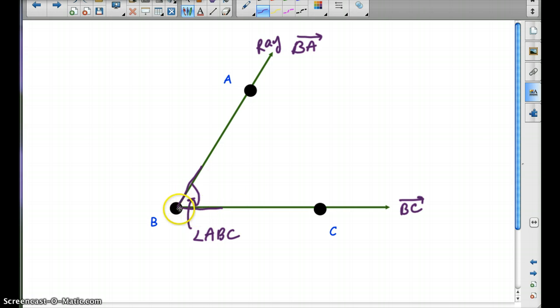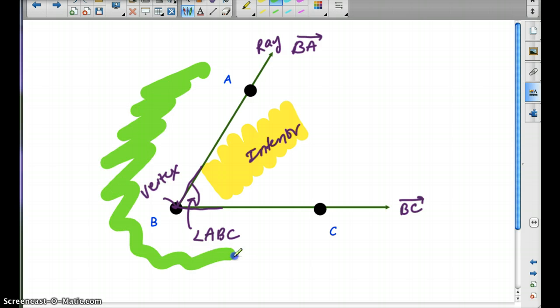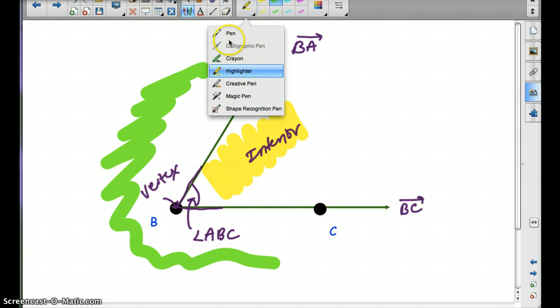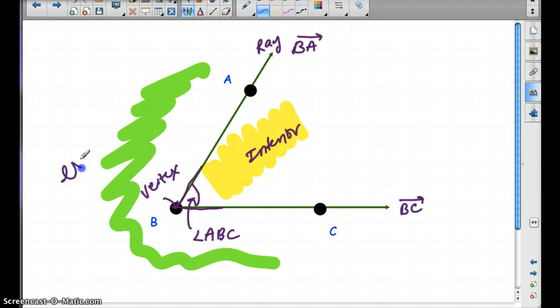So then an angle is where two rays meet. This is the vertex. So the vertex would be B. And we also had interior. So interior is going to be the inside of the angle. This would be the interior. And then the exterior is the outside of the angle.